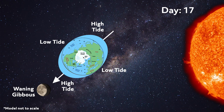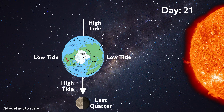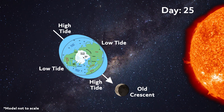The moon continues on until it reaches last quarter, which occurs about seven more days after full moon. At this point, we can see again that the Earth, moon, and Sun form a right angle, causing the bulges in the oceans to cancel each other out. So we see another neap tide. The moon then rotates back to the new moon position, starting the cycle all over again.